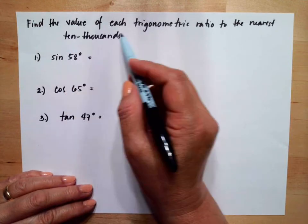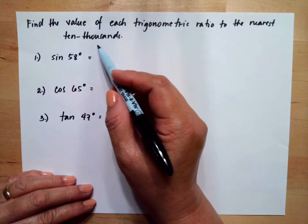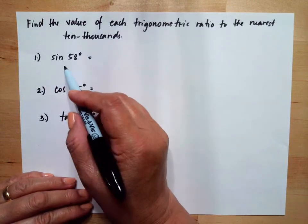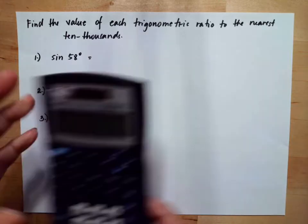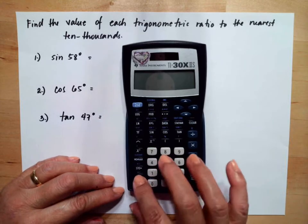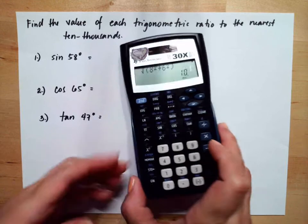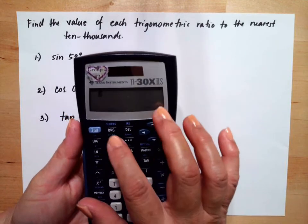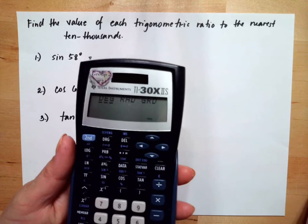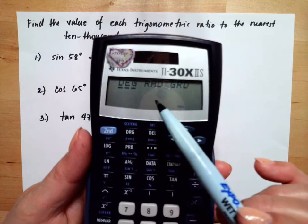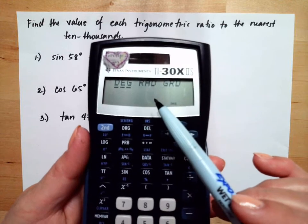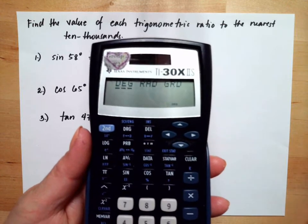Find the value of each trigonometric ratio to the nearest ten-thousandth. We have sine 58 degrees, so I'll use my calculator to do this. I need to make sure that my calculator is in degrees. We have DEG, so it is in degrees, because if it is in radians then I will get the wrong answer.